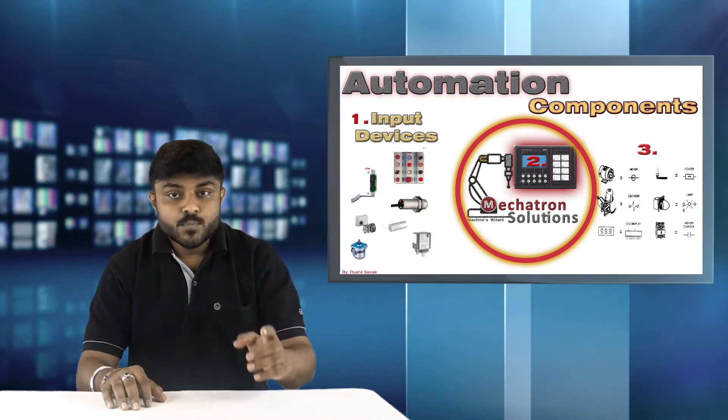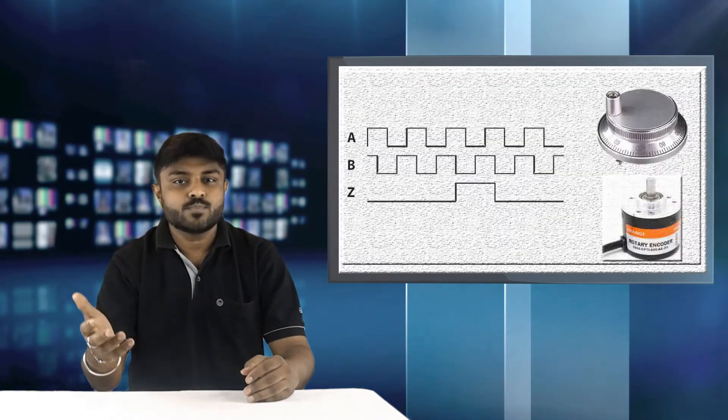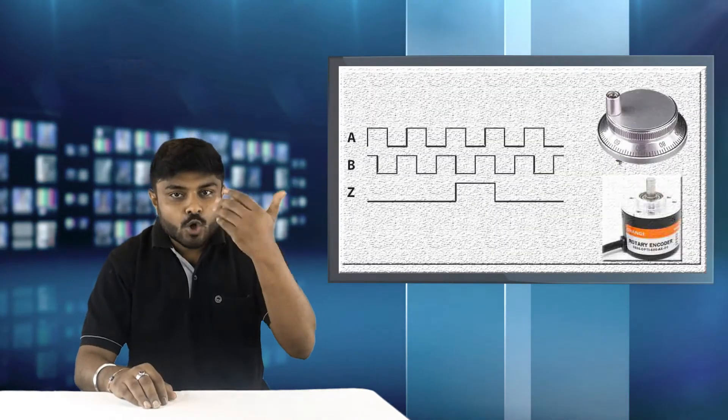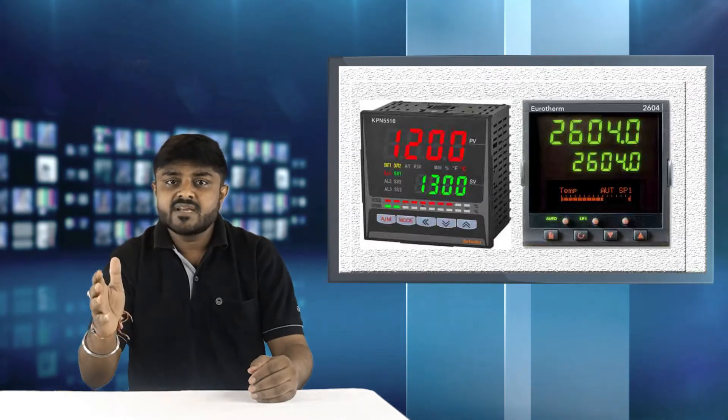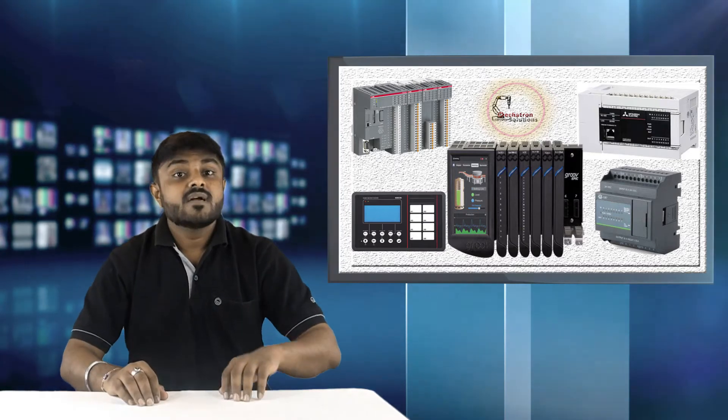First, input devices like switches, sensors, analog sensors and pulse train input. Then, automation controller like PID controller, dedicated process controller and programmable logic controller.